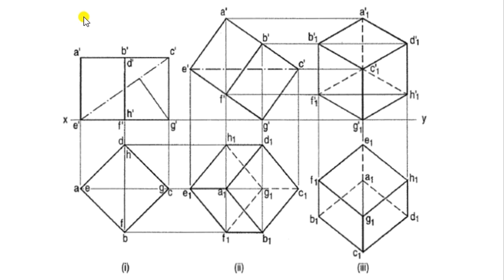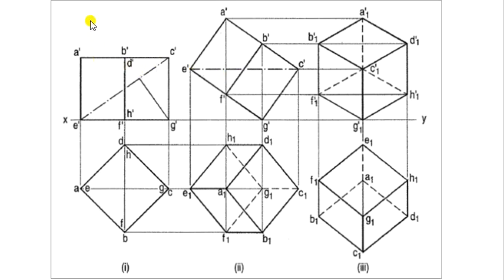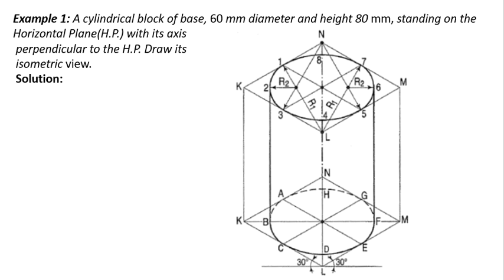In the top view, since the cross-section of the cylinder is circular, we will get a circle. On the side view, we again get a similar rectangle of the same height 80mm, and the top and bottom sides will be 60mm, equal to the diameter of the cylinder.